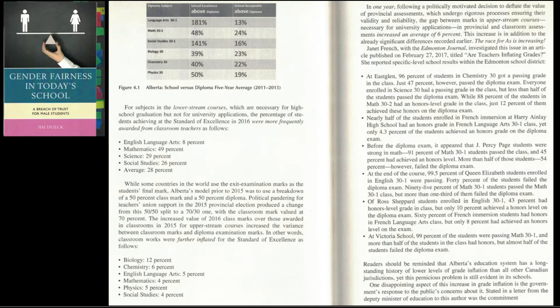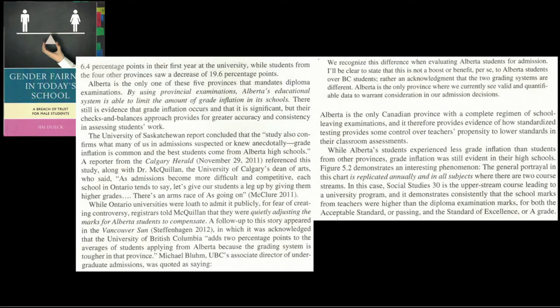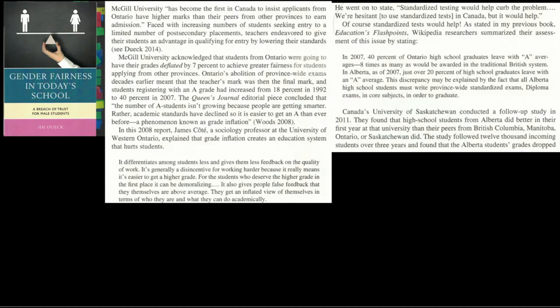In just one year, classroom averages increased by 6%, and this is an average across a province. Alberta has the lowest grade inflation in Canada, and we can quantify this in terms of the average drop in grades from high school to university. If you're a student from BC, Saskatchewan, Manitoba, or Ontario, you can expect your average in university to be around 19.6% lower than your average was in high school. If you are a student from Alberta, you can expect your average in university to be only 6.4% lower — the relative advantage of having been schooled in Alberta and subject to comparatively less grade inflation.